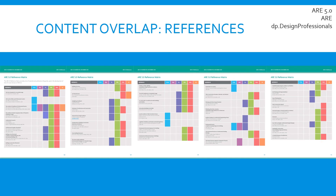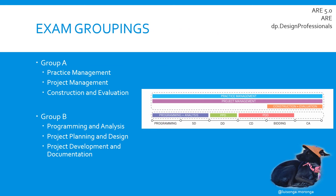So just based on looking at the AIA contracts and references, we've grouped the six exams into two groupings of three exams each. Group A is Practice Management, Project Management, and CE — based on the exam content and topics they cover. Group B is Programming and Analysis, PPD, and PDD. I've outlined these two groupings in a chart showing what topic areas those exams cover based on the different design phases.